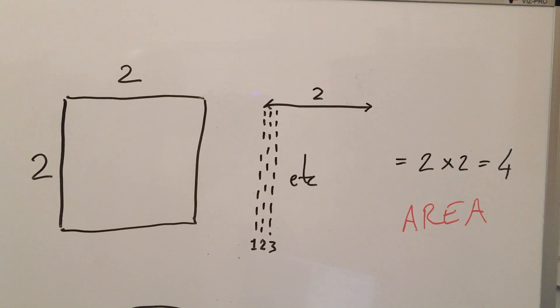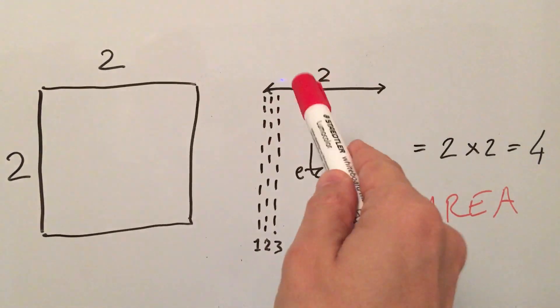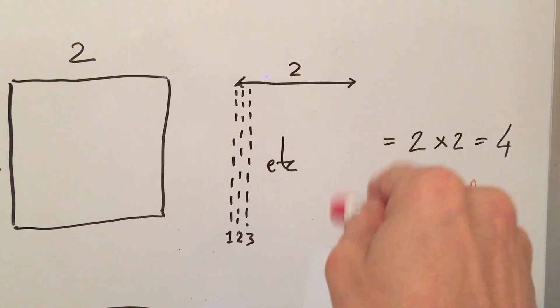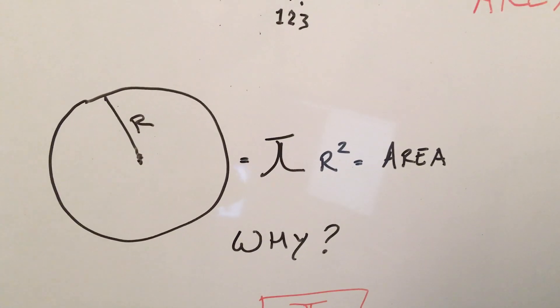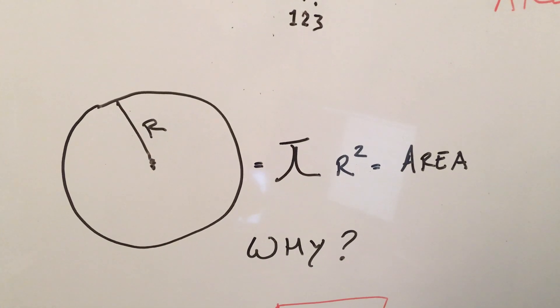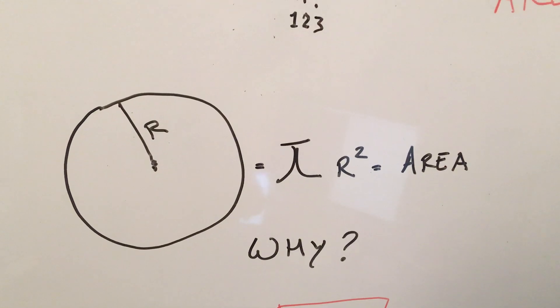If you understand this concept of what, as I call it, the painting in of this one line alongside, you should be able to figure out why the area of a circle is pi r squared. Do you know how to do that?